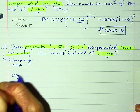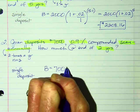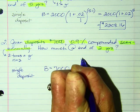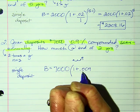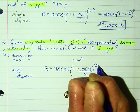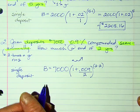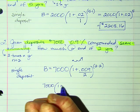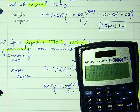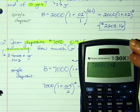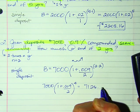This is a single deposit — he only mentions depositing an amount one time. So: Balance = 7,000 × (1 + 0.009/2)^(2×2). I enter: 7,000 × (1 + 0.009/2)^4. And I get $7,126.85.